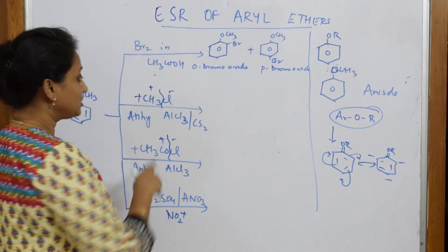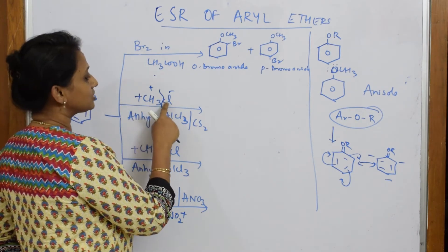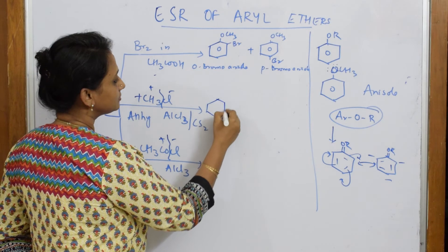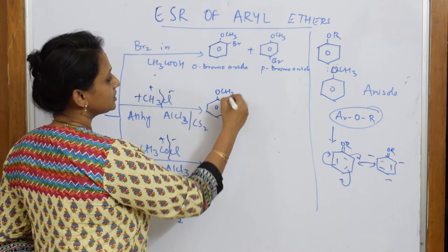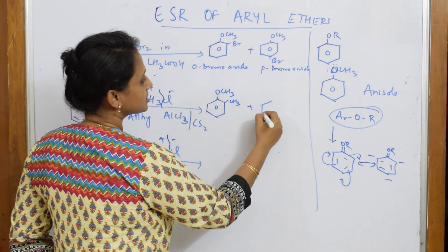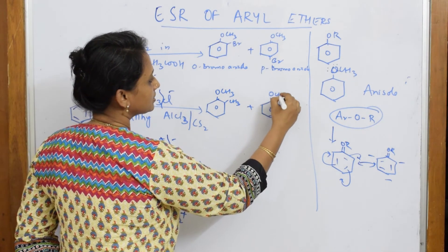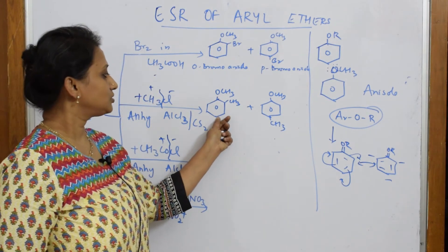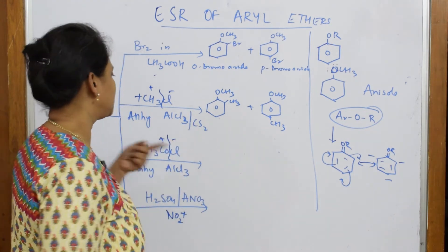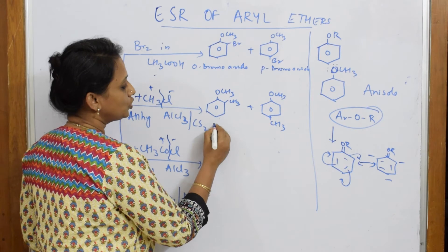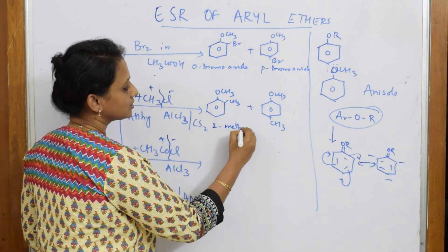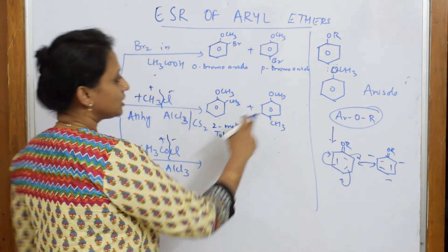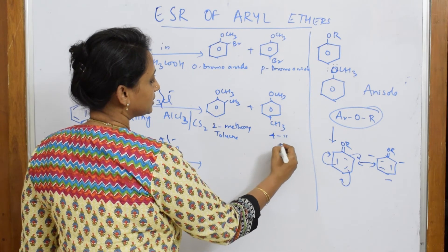In Friedel-Crafts alkylation, we are going to add an alkyl group. The alkyl chloride acts as the electrophile. Pick up anisole with OCH3, and add at the ortho position — plus OCH3 at the para position. How to name this? This is 2-methoxy-toluene. And this becomes 4-methoxy-toluene.